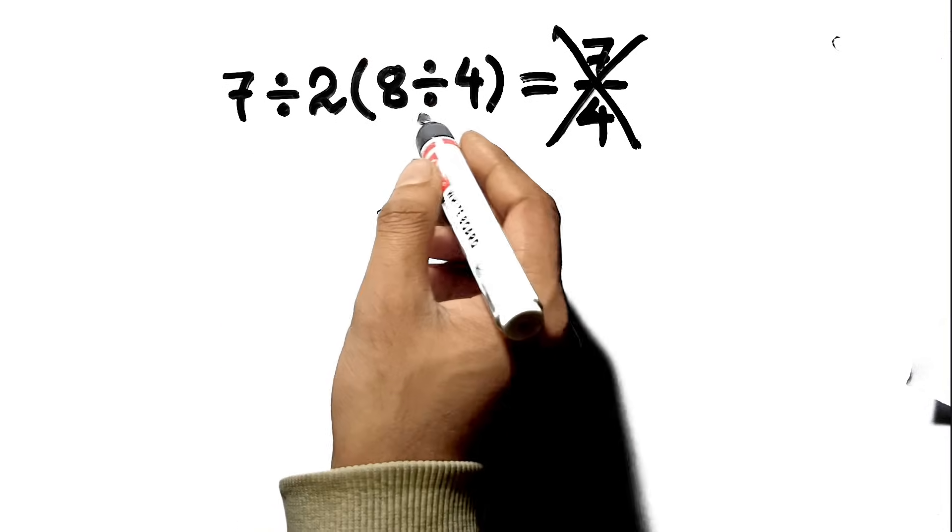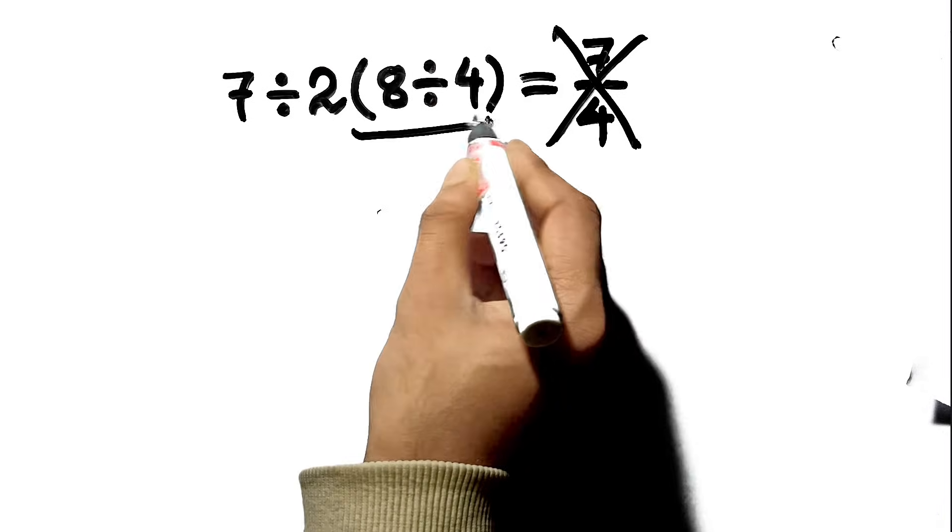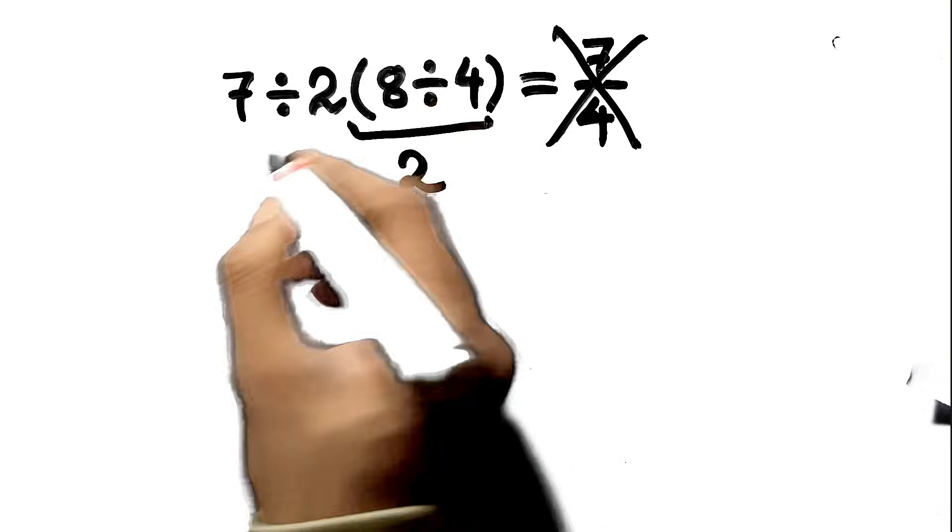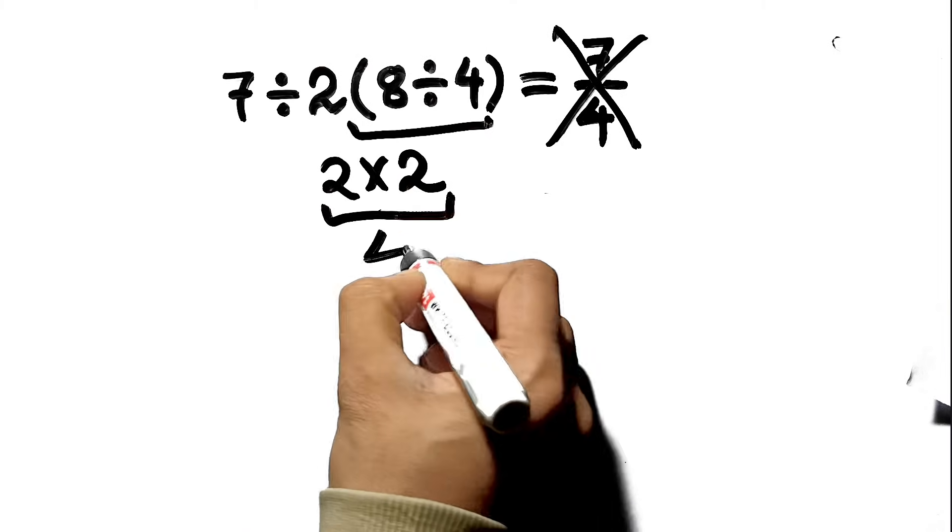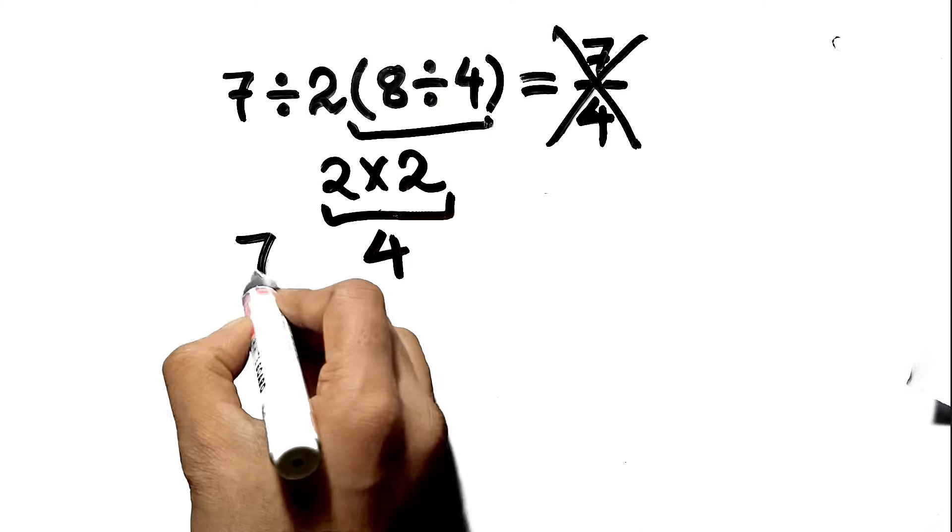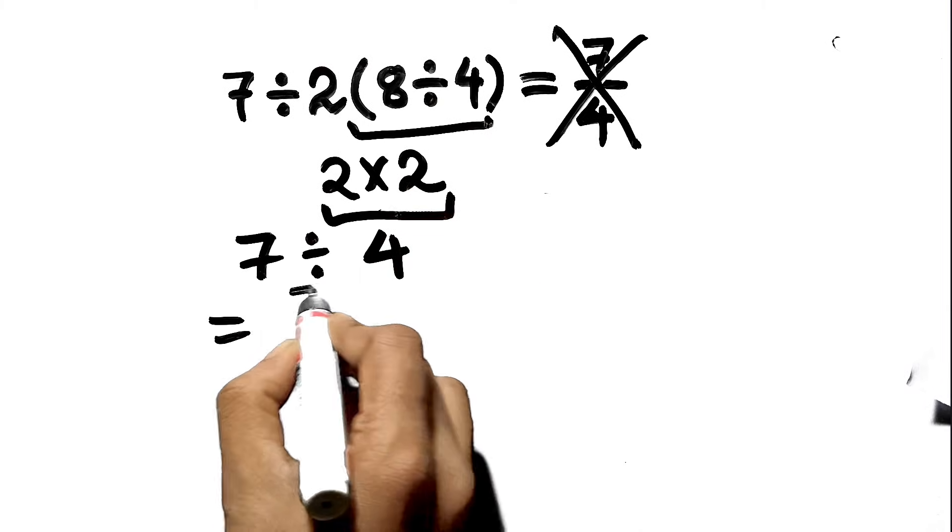You see the parentheses first. 8 divided by 4, that's 2. Then you look at the 2 outside, multiplying it. So 2 times 2 is 4. Finally, 7 divided by 4 gives you 7 over 4.